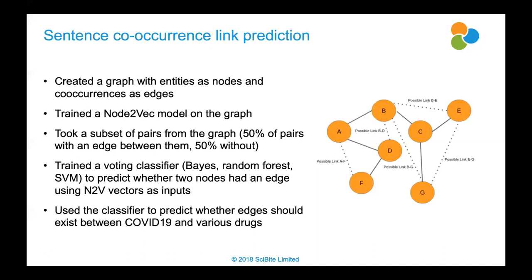I attended the virtual biohackathon a few weeks ago to support a couple of people who were creating knowledge graphs and trying to make a more searchable version of the COVID-19 dataset. I also wanted to do my own experiment using the data we created. My goal was to do some missing link prediction. I thought this would be good because COVID-19 itself is not very well represented in the literature, but is represented just enough that you can tell it's similar to other coronaviruses.